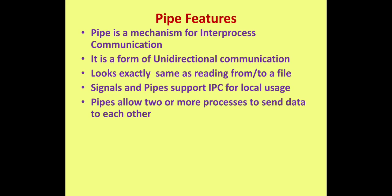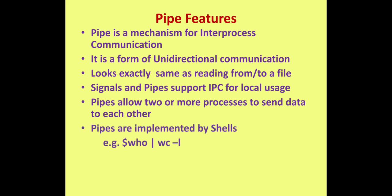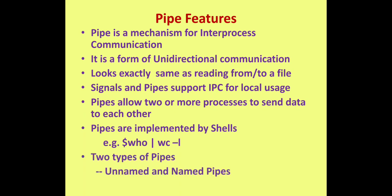Pipes allow two or more processes to send data to each other. Shells use pipes. For example, at the Unix prompt, if we type the command 'who | wc -l', the 'who' command generates one line of output per logged-in user. Instead of printing the output on screen, this output is piped to the next command 'wc -l', which counts the number of lines — so it prints the number of users currently logged in.